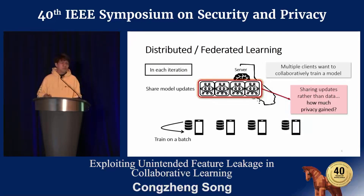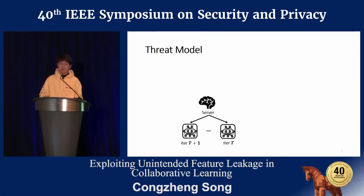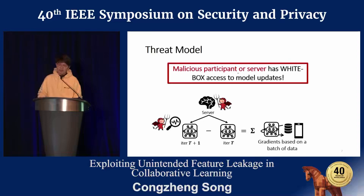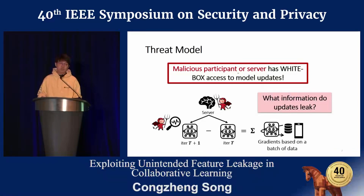The key question we investigate is how much privacy gain do we get by sharing model updates rather than sharing the raw data? Participants can access the global model in each iteration of training, and the difference between the models in two iterations equals the aggregation of model updates submitted by all participants in the previous iteration — these updates are just gradients computed on a batch of a client's data. By nature, a malicious participant or the server has white-box access to the model updates, since they join the training and can observe the change in the global model. So the question is: what information do these model updates leak?